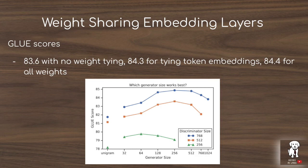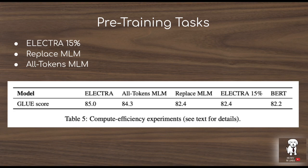Replace token detection is more efficient than masked language modeling because it defines the loss on the entire input sequence and removes the mask token from the training objective.